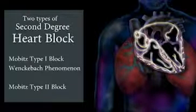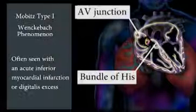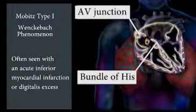There are two types of second-degree heart block: Mobitz type 1, or Wenckebach phenomena, and Mobitz type 2 block. Mobitz type 1, or Wenckebach phenomena, occurs in the AV node above the bundle of His.